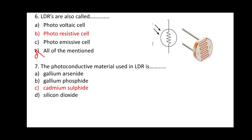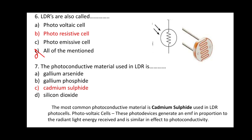Question 7: The photo conductive material used in LDR is? Option C is correct — cadmium sulphide. The most common photo conductive material used in LDR photocells is cadmium sulphide. Photovoltaic cells generate an EMF proportional to radiant light energy received, which is smaller than the effect of photo conductivity.